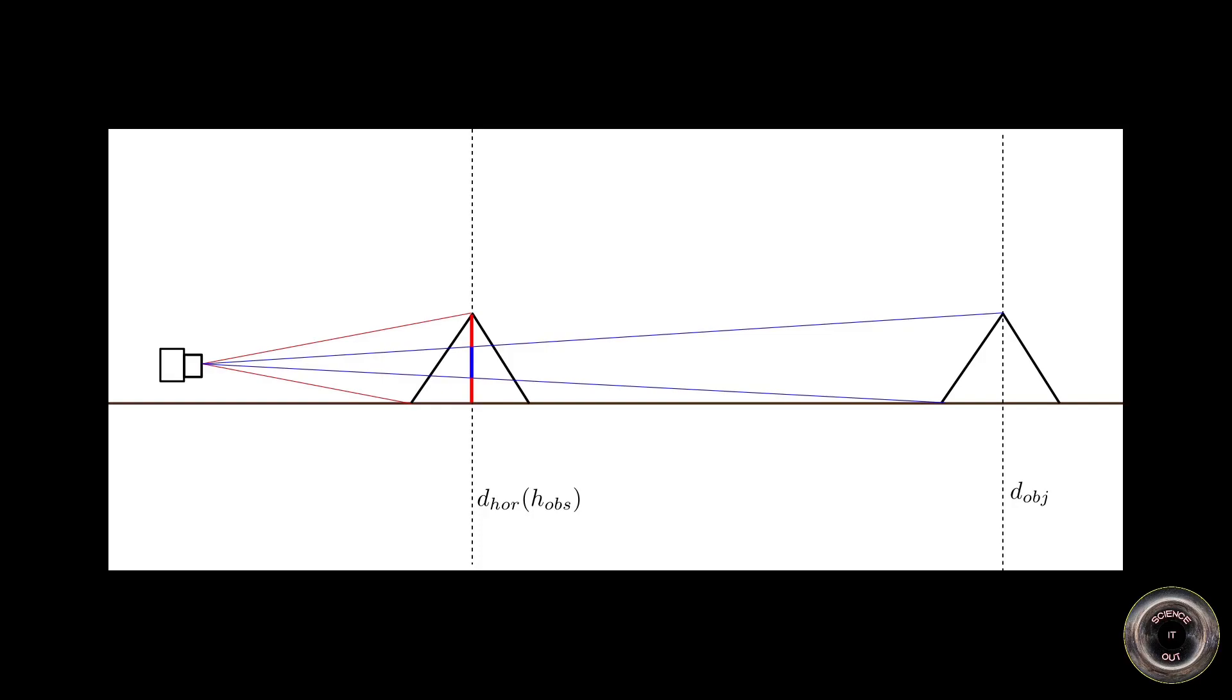then the angular size of the object at the horizon here will be represented by the angle between the red lines and the actual angular size will be represented by the angle between the blue lines. Then the ratio of angular sizes is roughly the proportion of the length of the blue line segment here to the whole height of the object, which is the red line segment in this illustration. Then the apparent height is just the height of this blue line segment. Or to put it differently, apparent height is the height of an object at the horizon that would have the same angular size as the target object at the given distance.